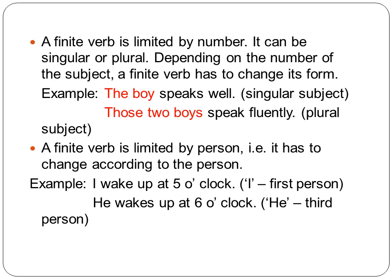A finite verb is also limited by person — it has to change according to the person. We have already studied first person, second person, and third person. For example: 'I wake up at 5 o'clock' — 'I' is the first person. 'He wakes up at 6 o'clock' — 'he' is the third person.